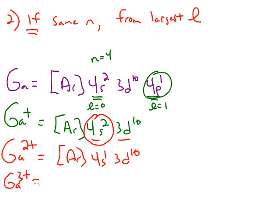And then if we make the gallium 3+ cation, we'll have an argon core, no electrons left in the 4s, but still 10 in the 3d.